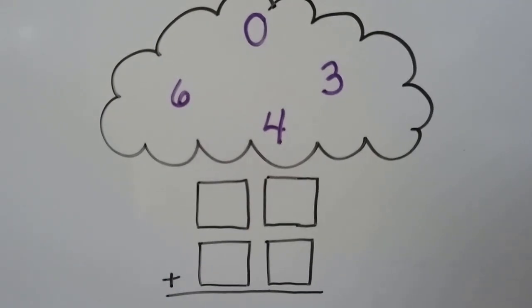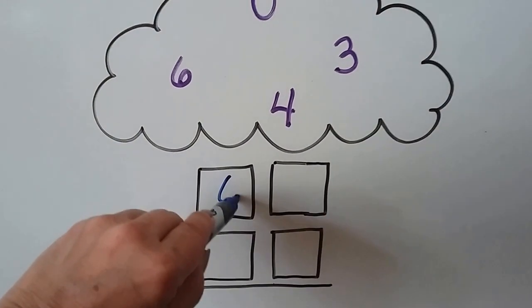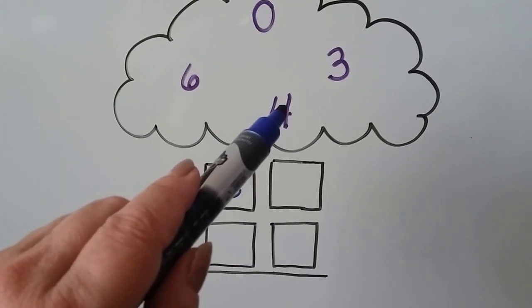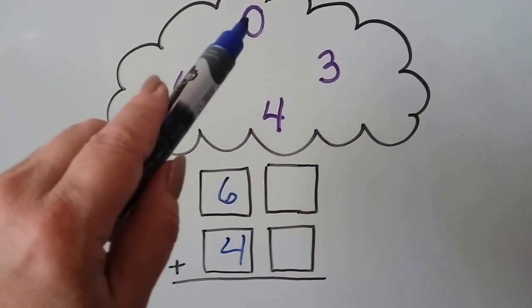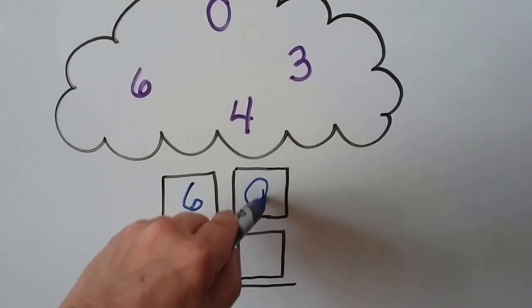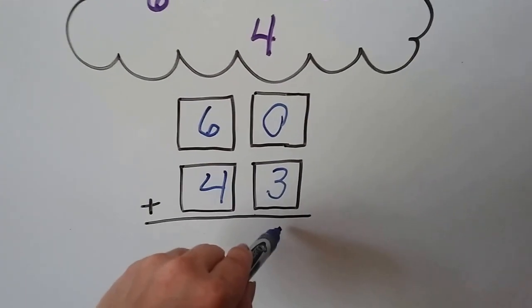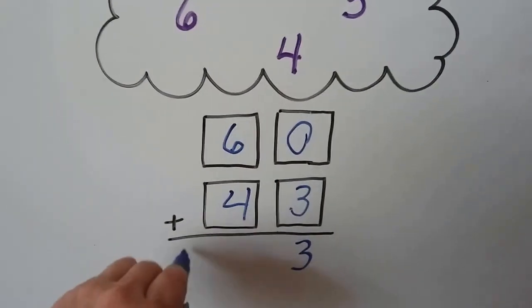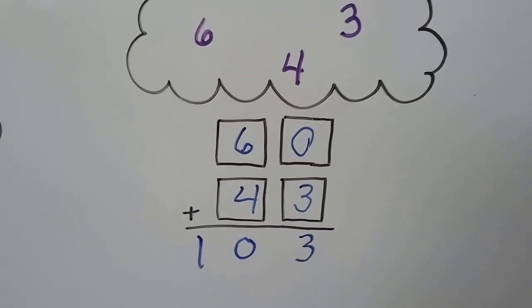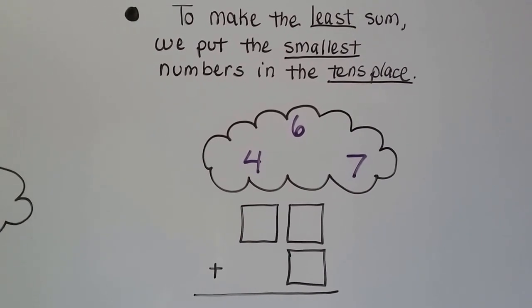Let's try one last one. We've got a zero, a six, a three, and a four, and we want the greatest sum. We put the greatest number into the tens place — that's a six. We put the four, which is the next greatest number, into this tens place. We've got a zero and a three for the ones place. Zero plus three is three, and six plus four is — six, seven, eight, nine, ten — we get a hundred and three.